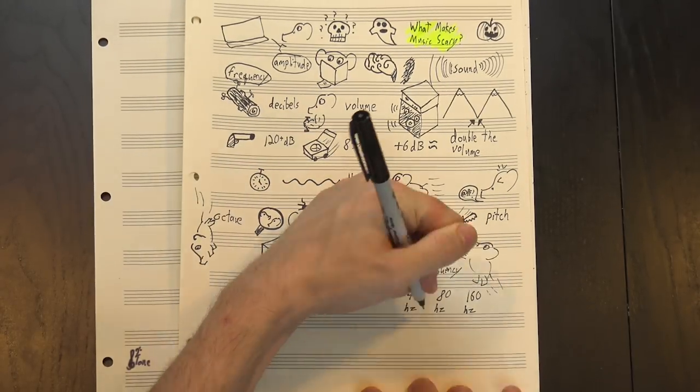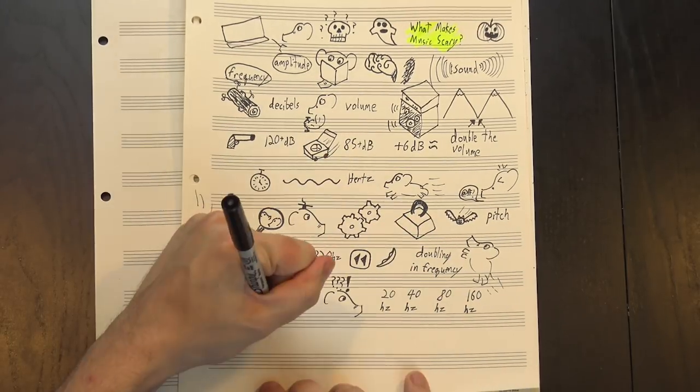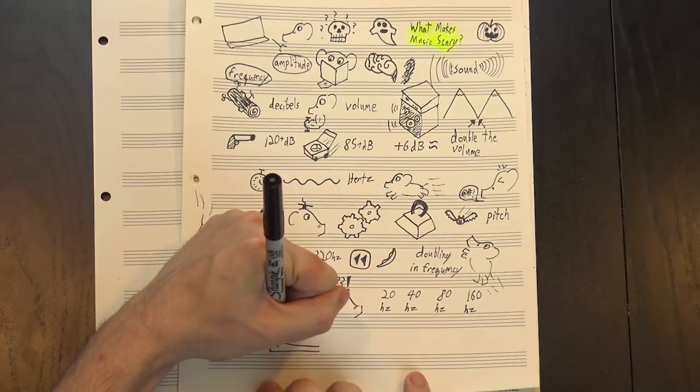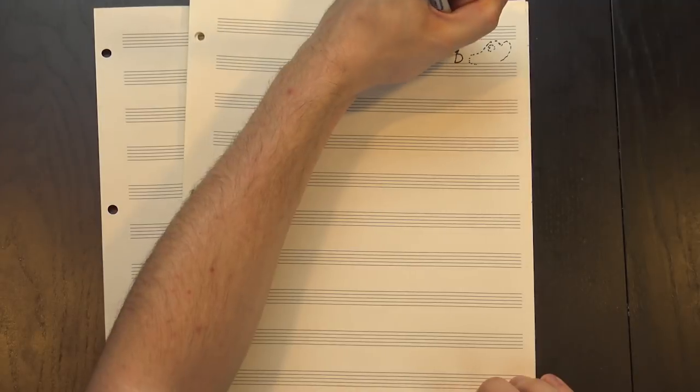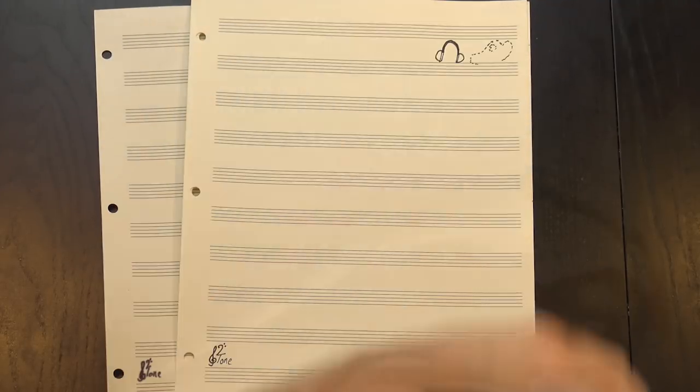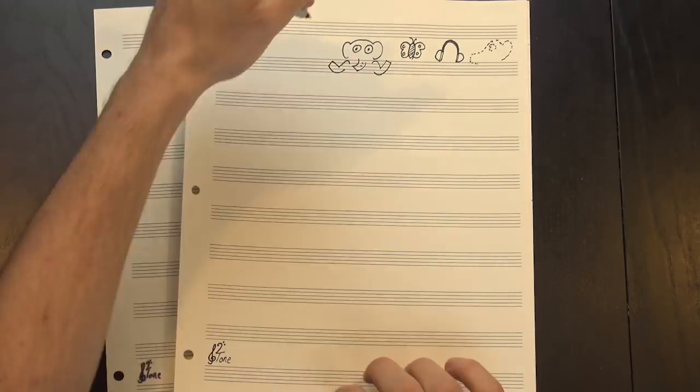Doing that again gets us to 80 hertz, 40 hertz, and then 20 hertz, and if you can't hear that one, don't worry. 20 hertz is generally considered the absolute bottom of human hearing, and it gets worse. Not only is it hard for you to perceive it, but there's a good chance the speakers you're using can't produce it. Manufacturers know that you can't really hear this range anyway, so they often cheap out on making it work.